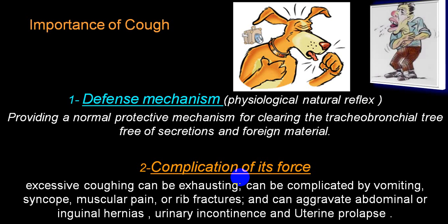To summarize, we divide cough into two big groups: dry and productive, and depending upon duration into acute, chronic, and subacute. Cough is basically a defense mechanism and a natural reflex providing a protective mechanism that clears the tracheobronchial tree from secretions, foreign bodies, and chemicals.